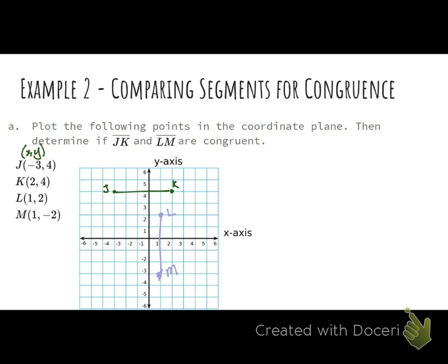We need to know if they are congruent, which means we have to know how long they are. We have an advantage. As of right now, these lines are parallel to one of the axes. We don't have a slope that's not zero or undefined, which means that we can count it by just counting. 1, 2, 3, 4, 5.